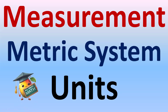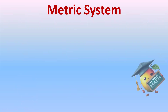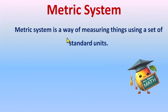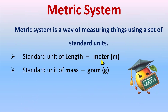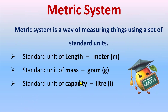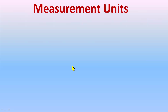What is the metric system? The metric system is a way of measuring things using a set of standard units. The standard unit of length is the meter, the standard unit of mass is the gram, and the standard unit of capacity is the liter.